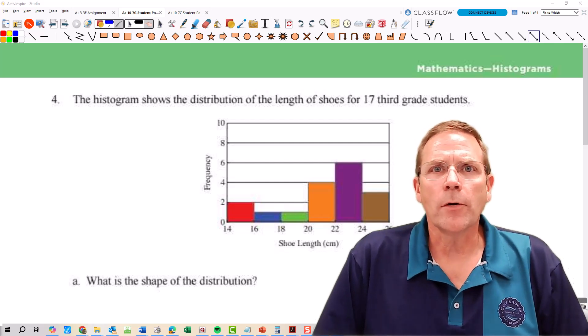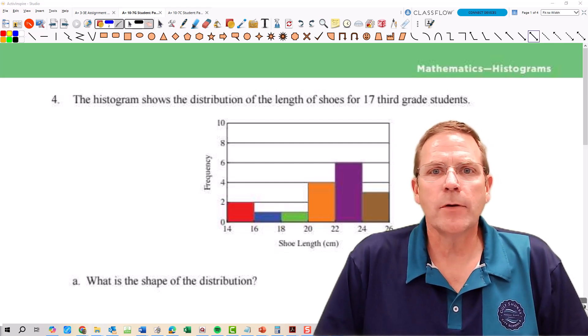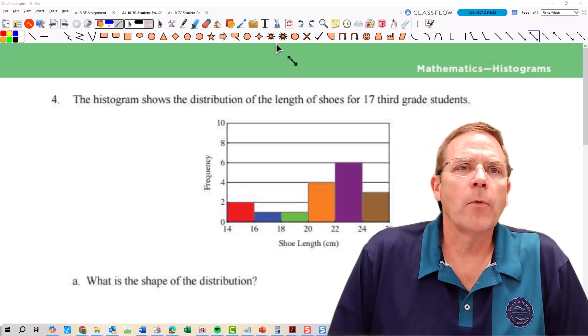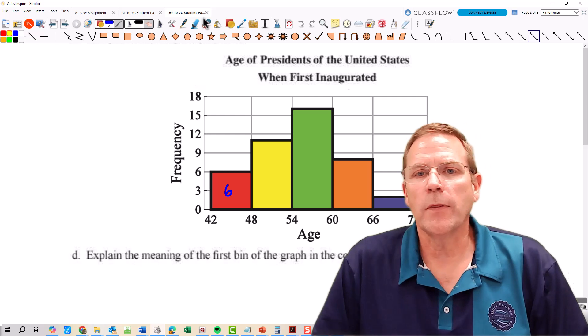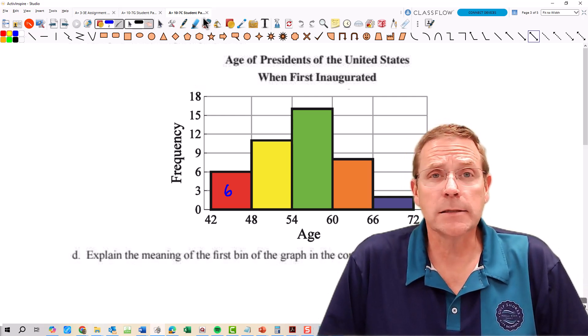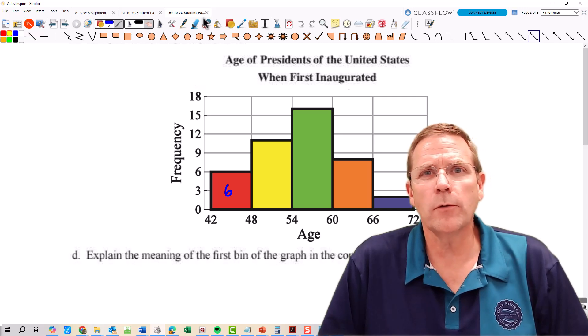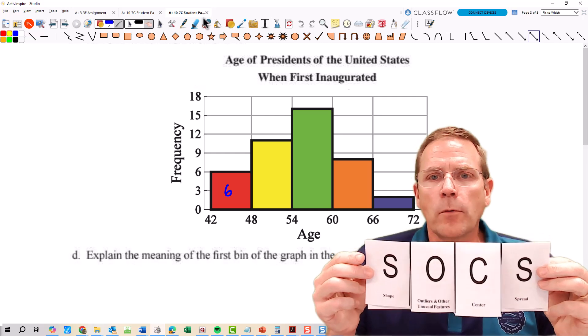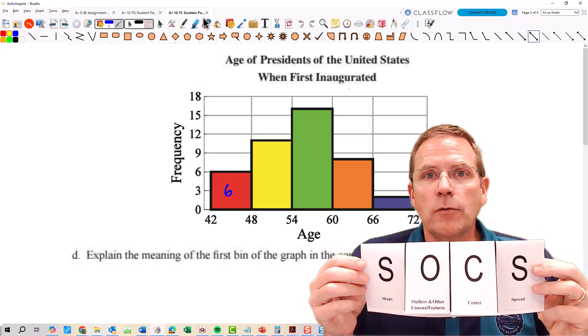Welcome back to the second part of module 10 lesson 7, where we're going to continue our study into histograms. We're going to pick up where we left off yesterday with this histogram right here. Remember when we SOCSed earlier in the module? Well that's what we're going to do. We created this foldable and this is what we're going to be using.